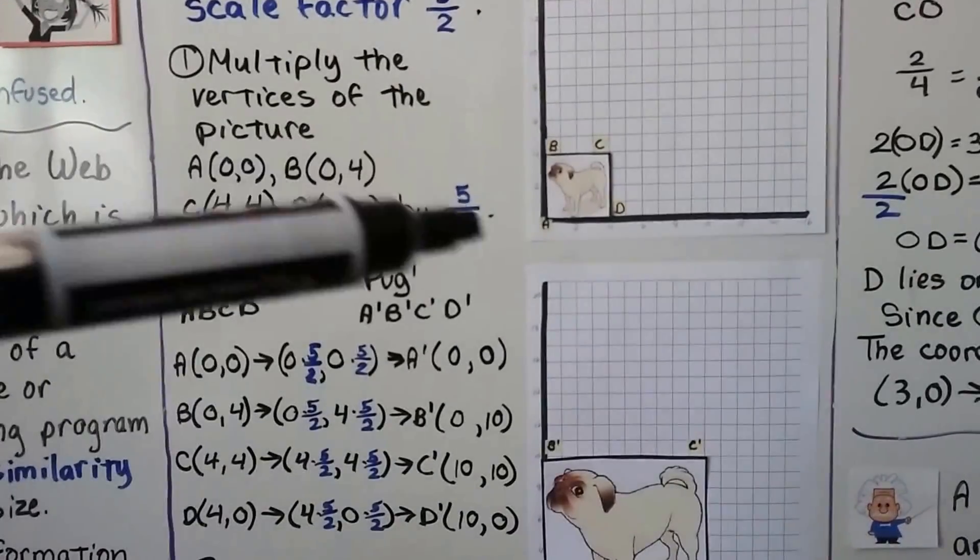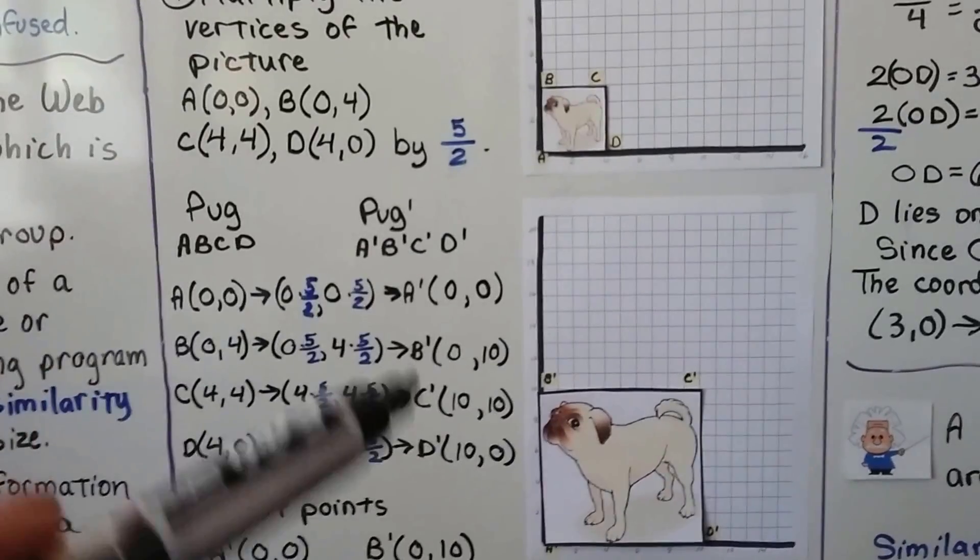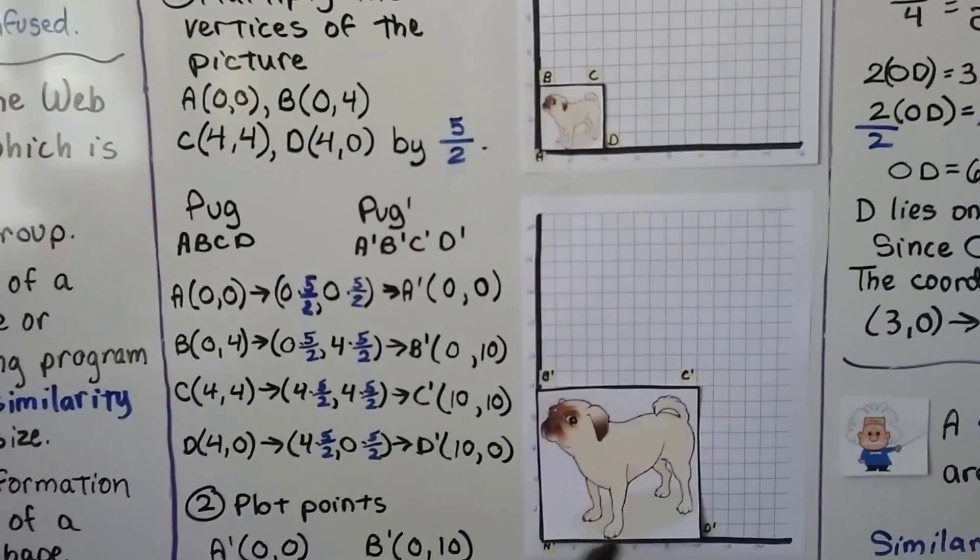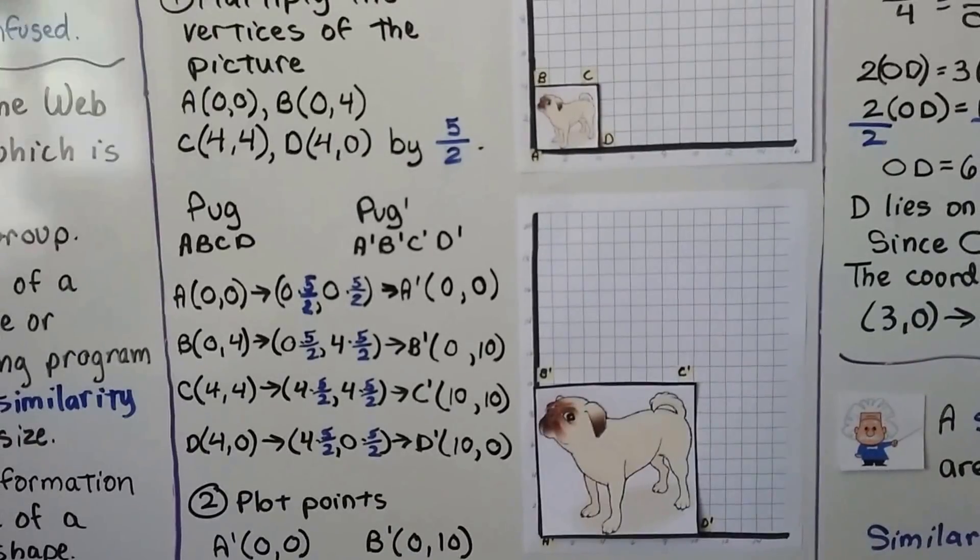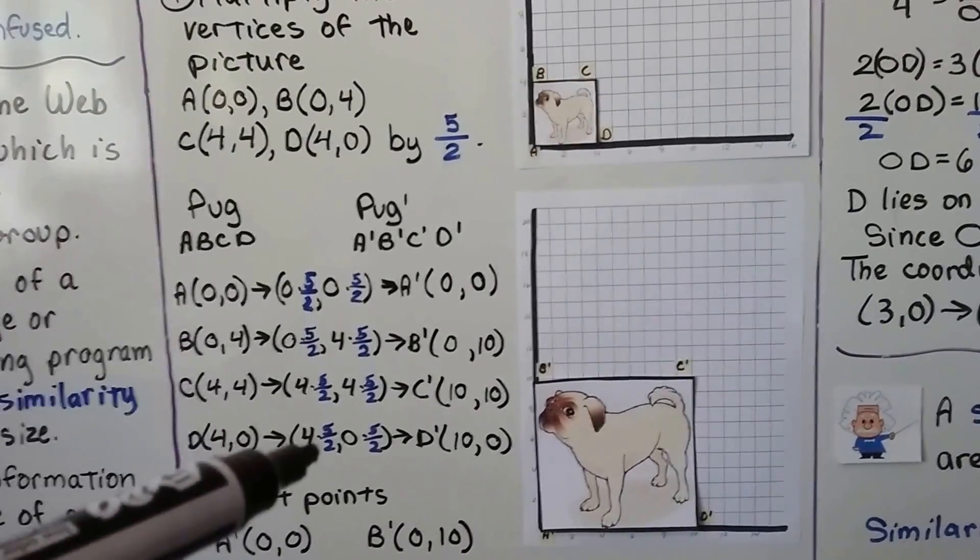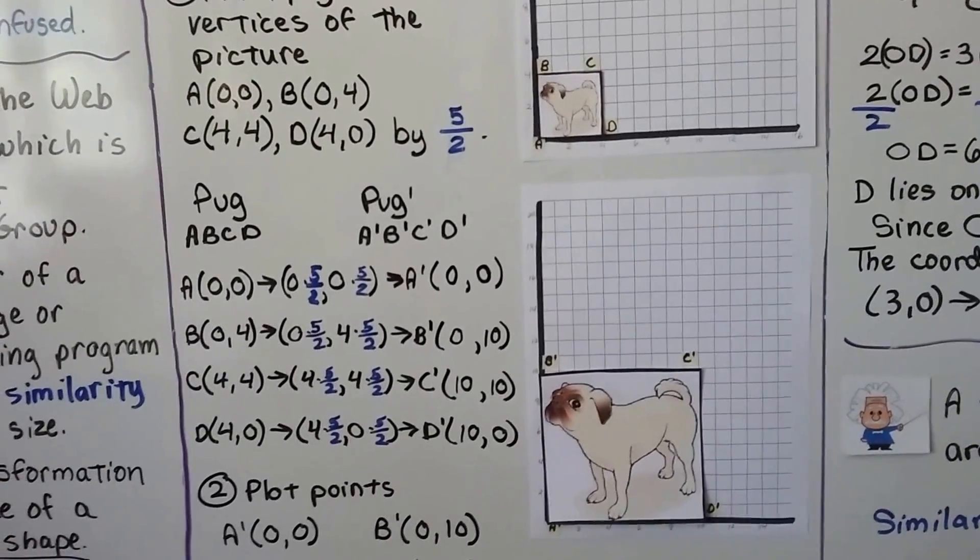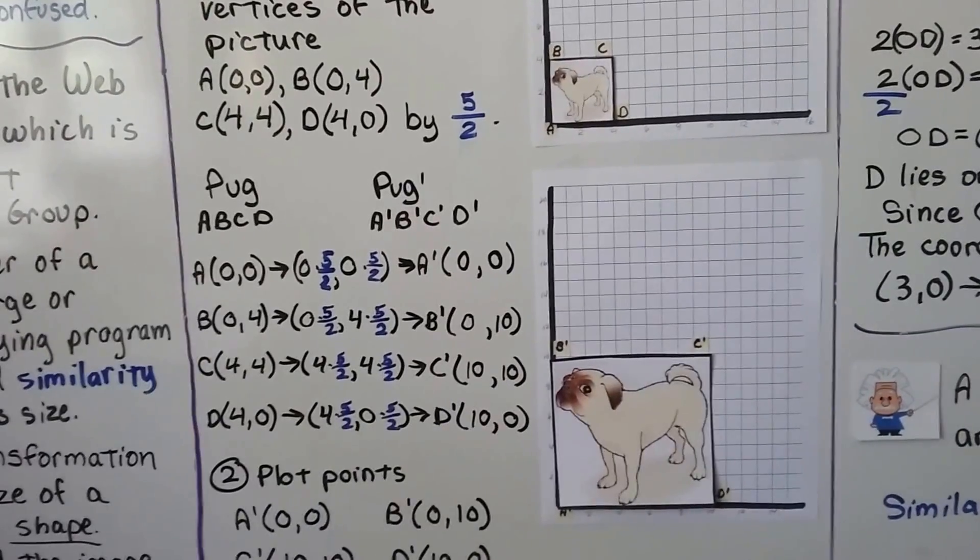We have our pug ABCD, and we'll have pug prime A'B'C'D'. This is our pre-image and that's our image. We take all the coordinates of A, B, C, D, multiply the X and Y by five halves, and we'll get A', B', C', D'.